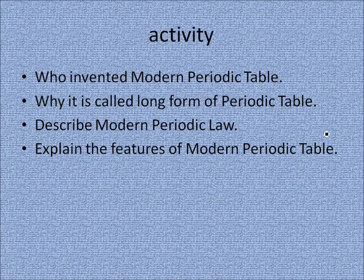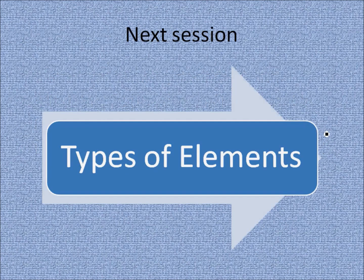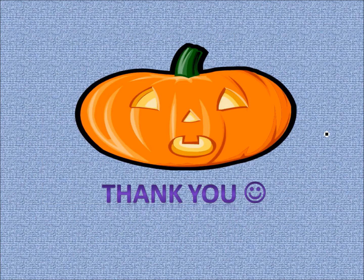This ends the session on the modern periodic table. For an activity, here are four questions to answer: Who invented the modern periodic table? Why is it called the long form of the periodic table? Describe the modern periodic law. Explain the features of the modern periodic table. In the next session, we shall learn about the types of elements. Thank you.